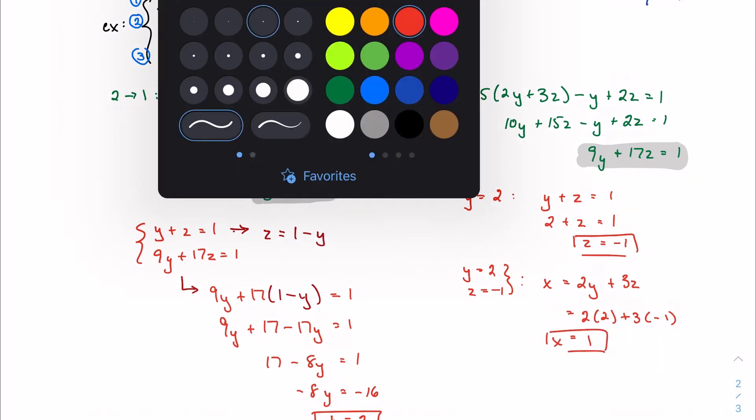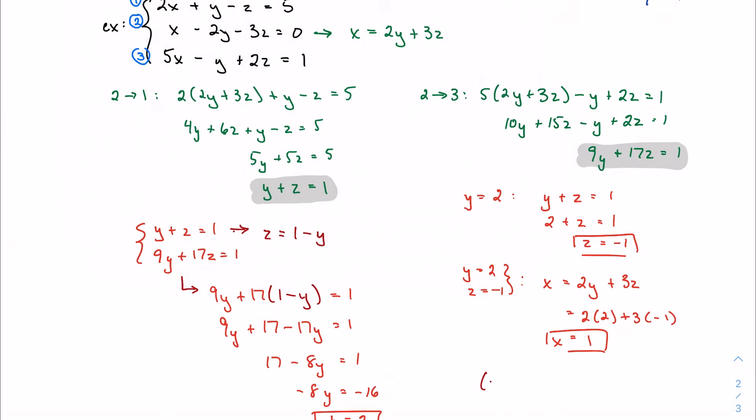And then we want to, just as we have before, write our solutions as ordered pairs. Well, I guess in this case, ordered triplets. So x, y, z is one, two, negative one.